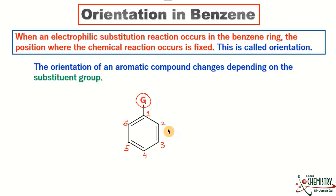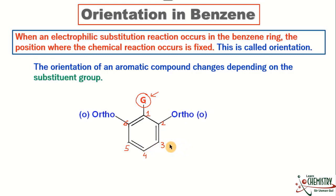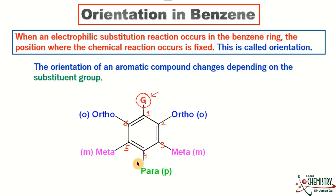Position numbers two and six are identical with respect to this group, so they share a single name: ortho. Position numbers three and five are also identical with respect to this group, so we call them meta. Position number four is different from all other positions, so it is called para. There are a total of three positions: ortho, meta, and para. Where the next group will come is decided by the existing substituent group — this is called orientation.